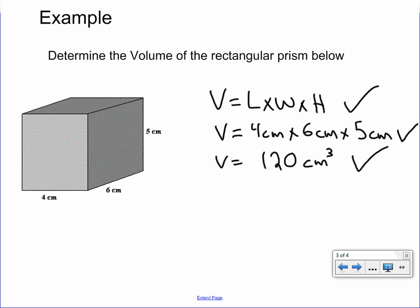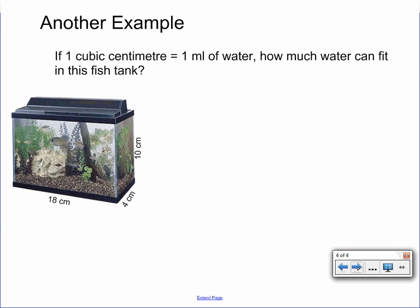Let's go to the next example here. Another example. This one's a little bit tougher, more real life. If one cubic centimeter equals one milliliter of water, how much water can fit in this fish tank? So milliliters and cubic centimeters are interchangeable for water. They're equal to the same thing. They have a one-to-one ratio.